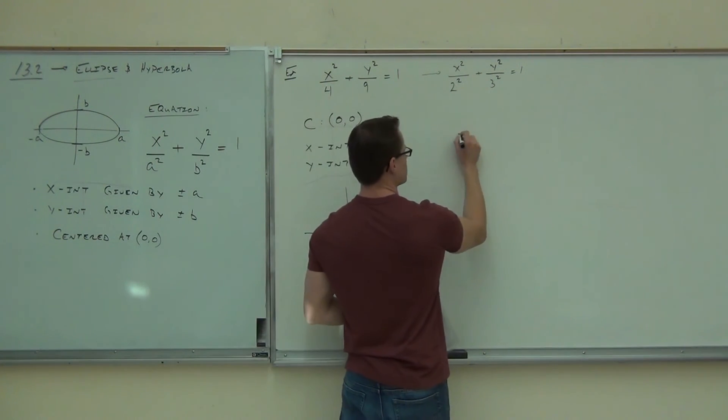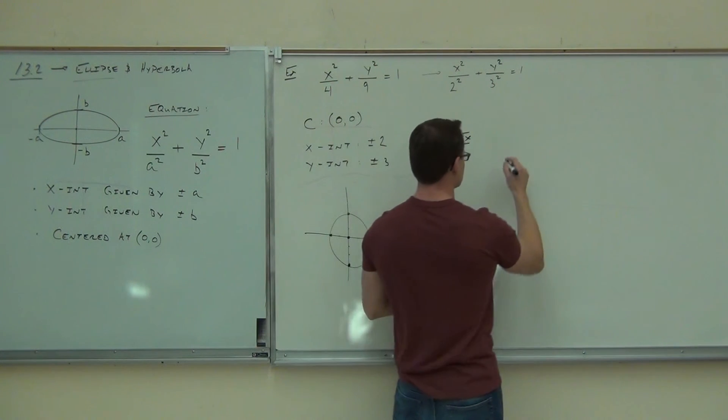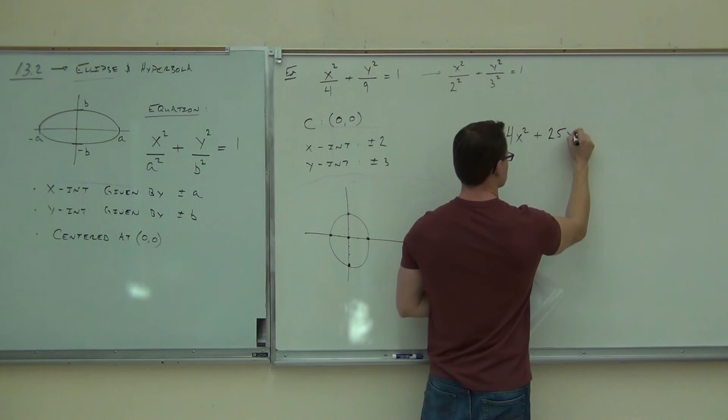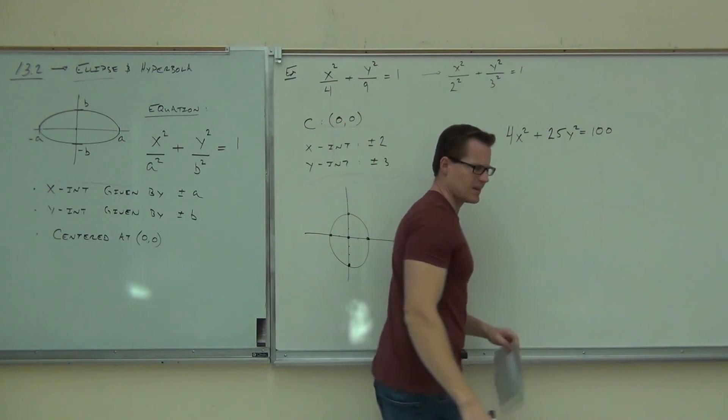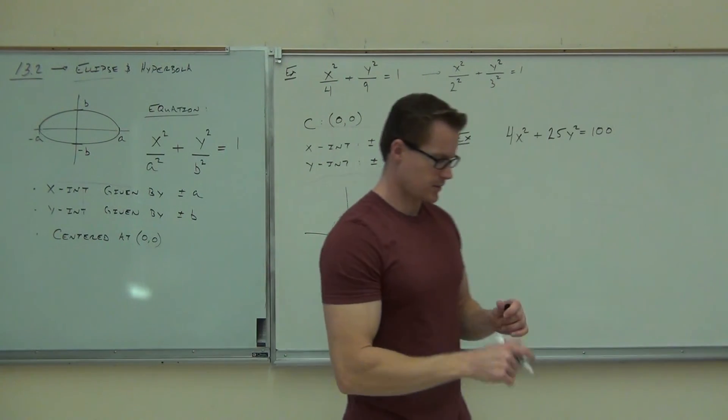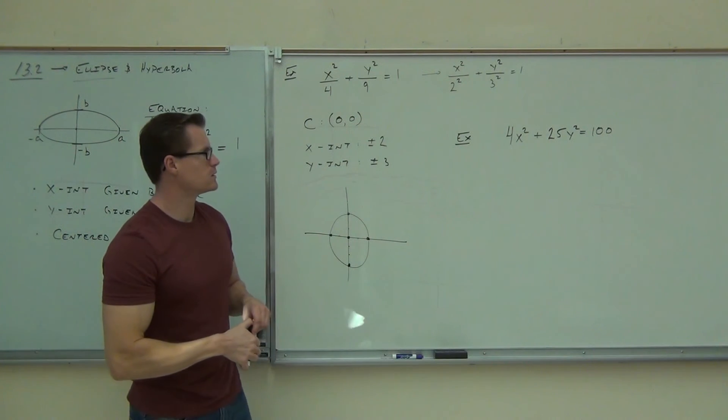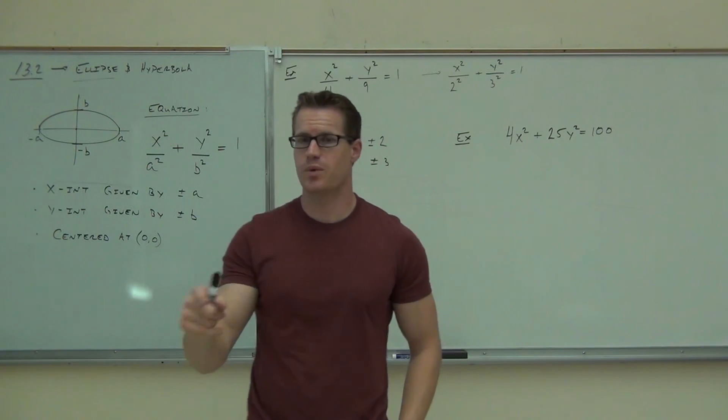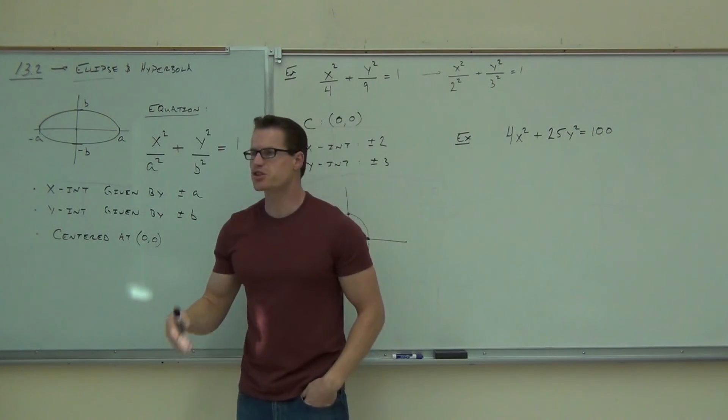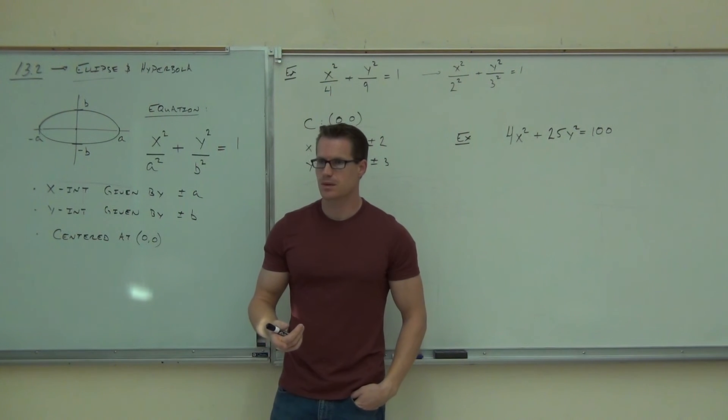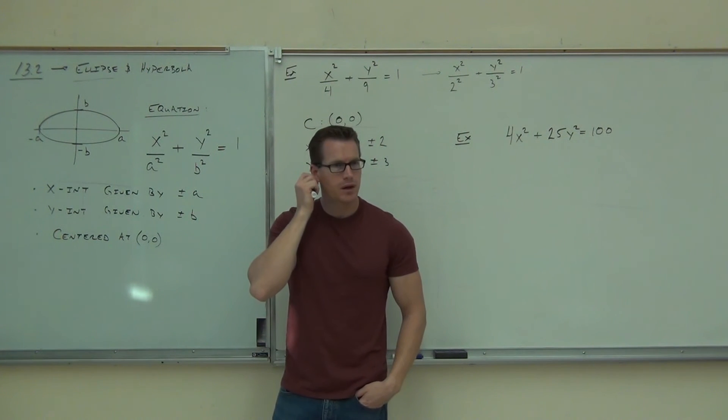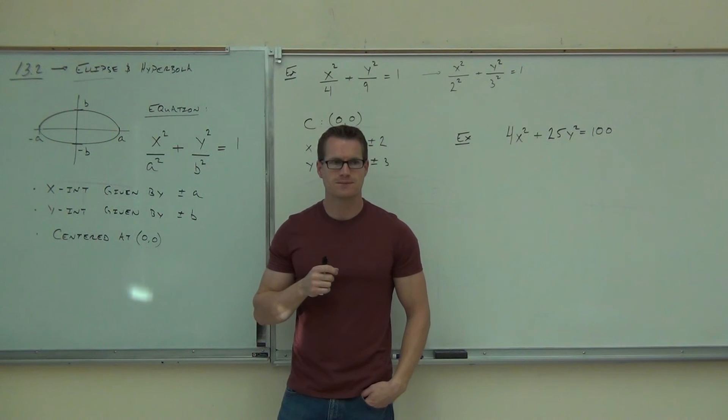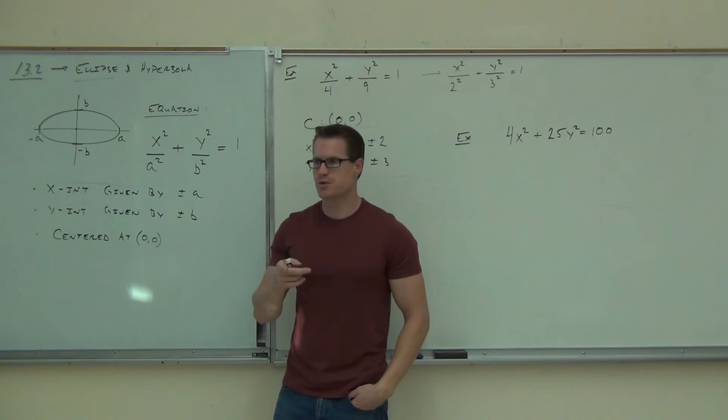Okay, our last example for today. Now, that looks a little weird. That looks a little weird. Well, let's go through the process. Let's identify what type of shape this is. Firstly, is it a parabola? No. That looks nothing like a parabola. Is it a circle? Yes. Is it a circle? It's got a square, doesn't it, in both the x and the y. It's got a plus in the middle. However, are the numbers the same? No.